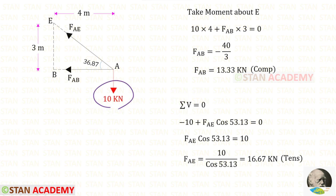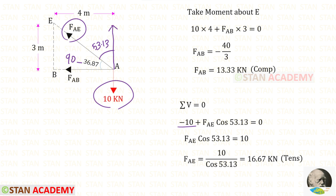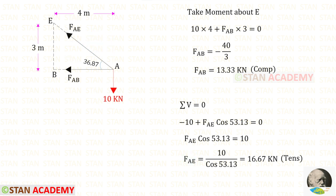10 is acting downwards so it will be negative. FAE is inclined; we have to make it vertical. To make it vertical, we need this angle, that is 90 minus 36.87, which will be 53.13. FAE is acting upwards so it will be positive and we have to multiply with cos 53.13. For FAE, we will get a positive value, that means it is tensile.